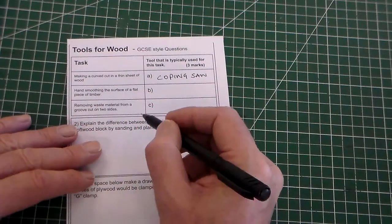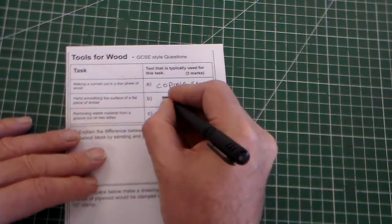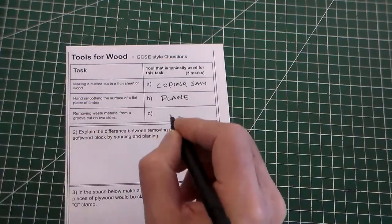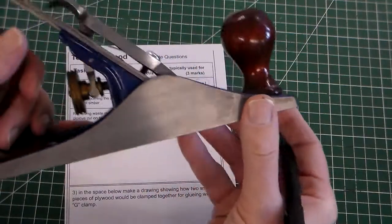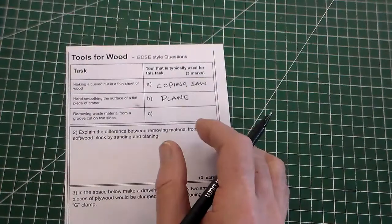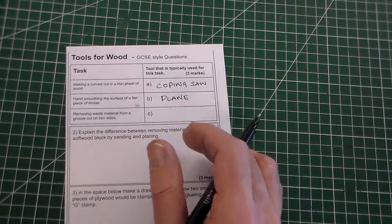Task two, hand smoothing the surface of a flat piece of timber. And that is a plane. This is the plane, it has a blade here. Push it along and it takes off a thin piece of timber.